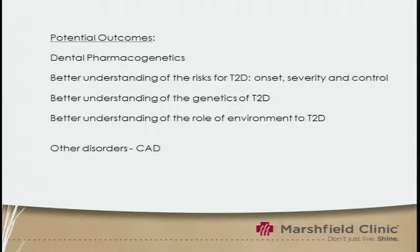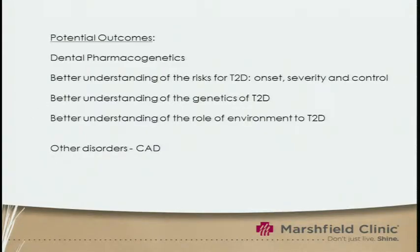The potential outcomes from this would be to begin a dental pharmacogenetics study, and then better understanding of risk for type 2 diabetes onset, severity, and control, as well as drilling down to better understand the genetics of type 2 diabetes and the role of the environment. This could be expanded to other disorders linked to periodontal disease, for example, coronary artery disease.